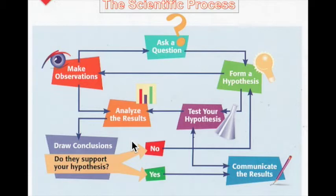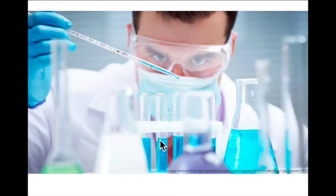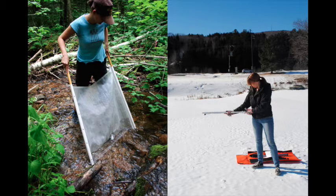You may recall from video 3A that we talked about the scientific process, and we referenced one of the steps as being testing your predictions or hypothesis with controls. This step can be conducted in a laboratory with control and experimental tests, or when research is conducted to gain a better understanding of how the natural world works. Depending on what a scientist wants to learn, there are many different methodologies and types of equipment that can be used.